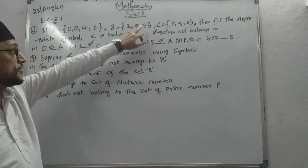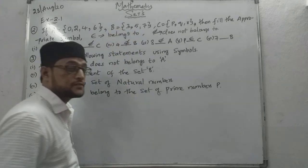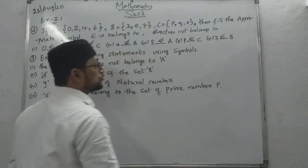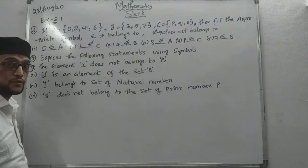Next 7, where is 7? 7 here, in set B, that means 7 belongs to set B. Okay?